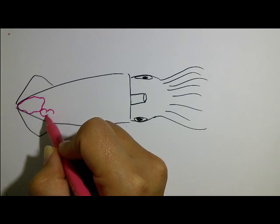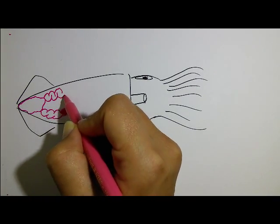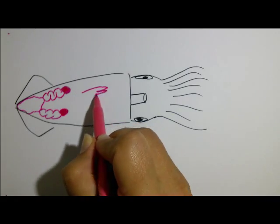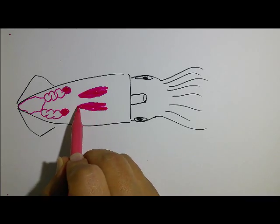On the inside she has an ovary, two oviducts, two oviducal glands, and two big nidamental glands. Also three hearts and a bunch of other stuff that we don't care about now.